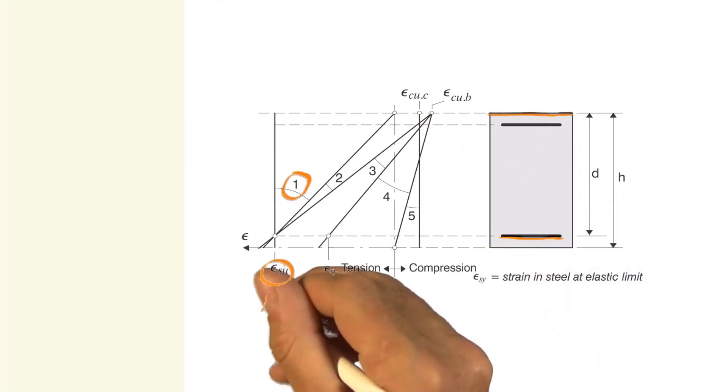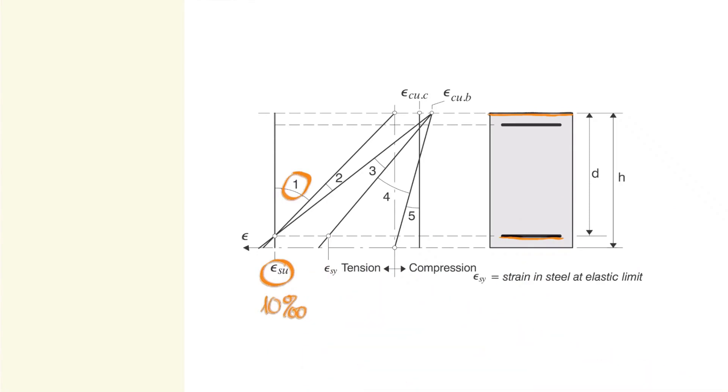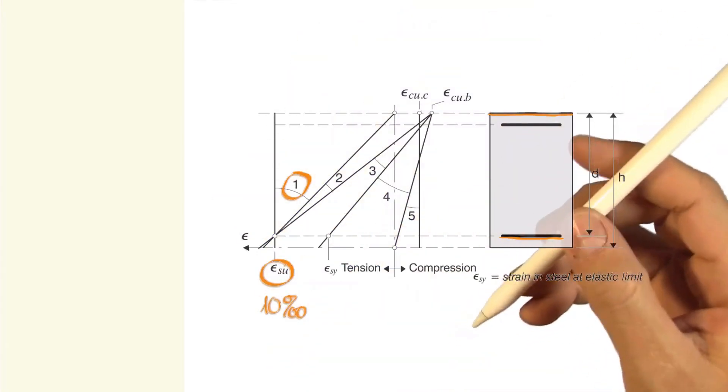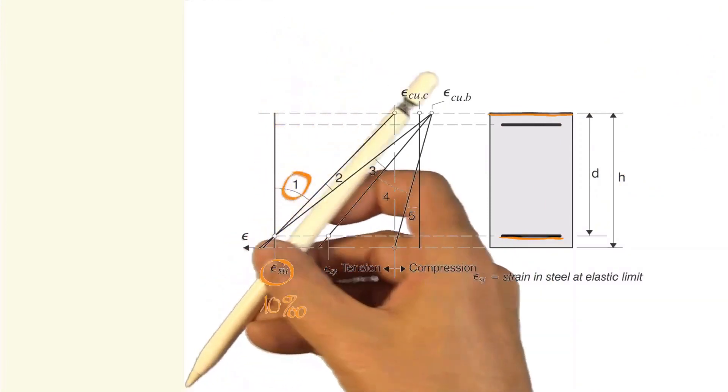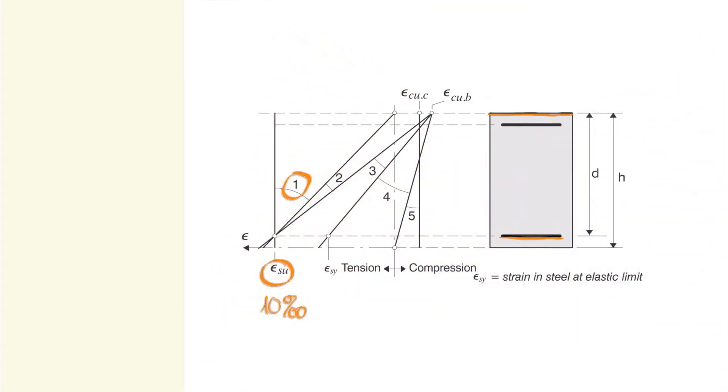which will normally be 10 per mil or 20 per mil, depending on the applied codes. This domain is defined as having the entire cross-section under axial tension, which will remain the case just up to the point in which our cross-section begins to have slight compression.